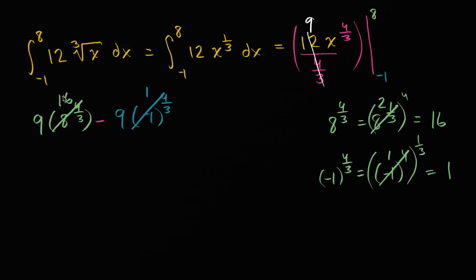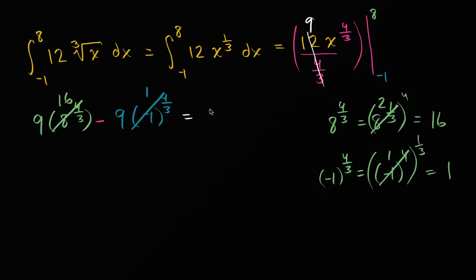So we have 9 times 16 minus 9 times 1, which is 9 times 15. We have 16 nines and then take away one nine, leaving 15 nines. Nine times 15 is 90 plus 45, which equals 135. So the definite integral equals 135.